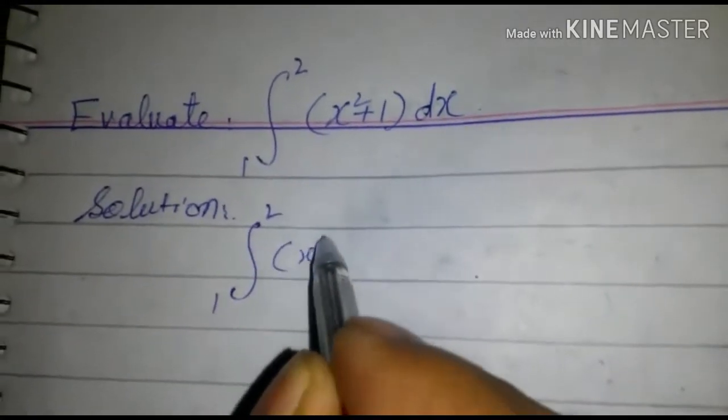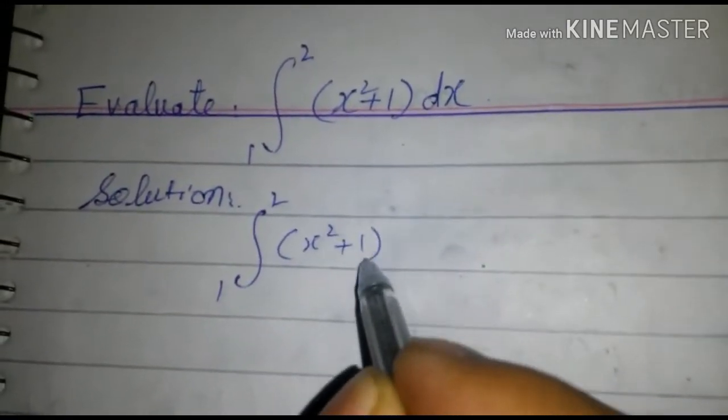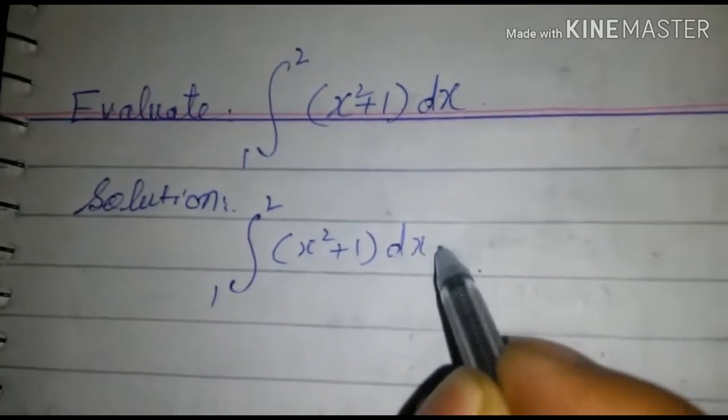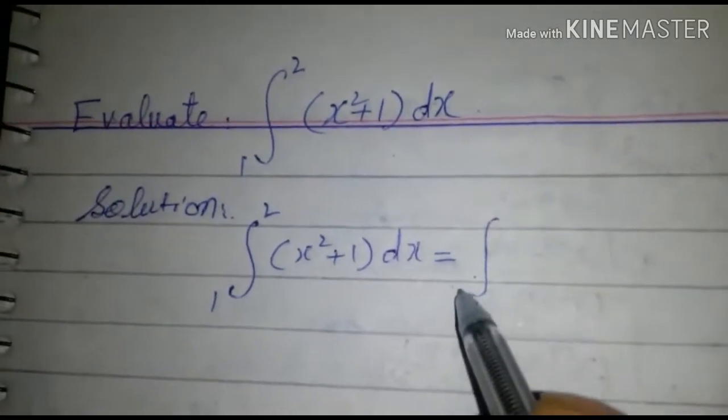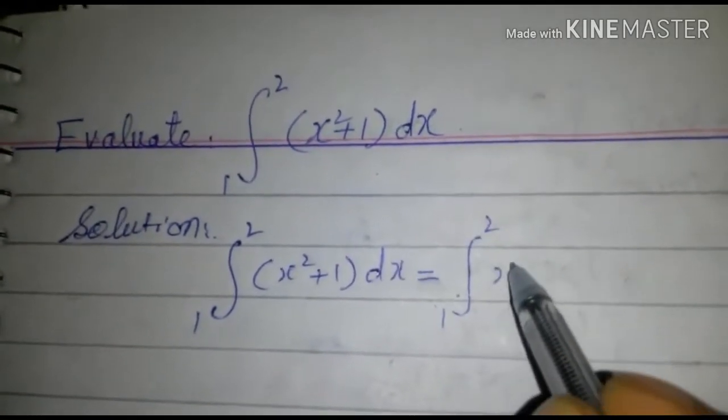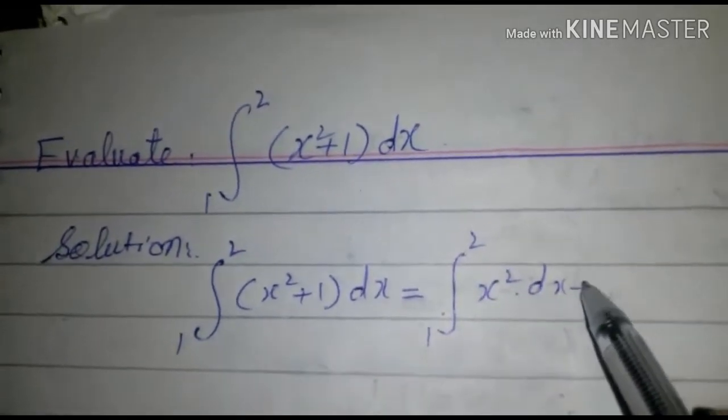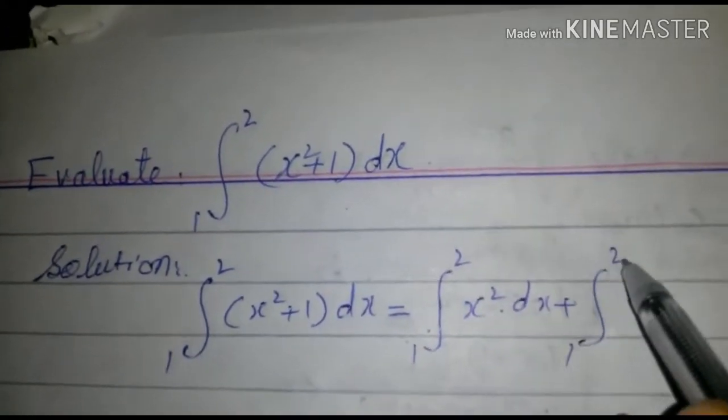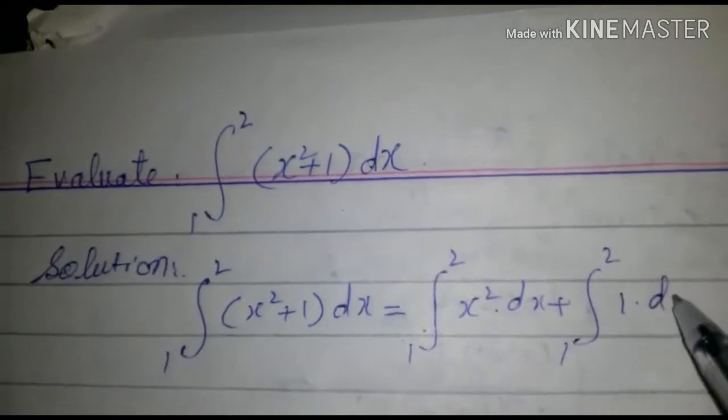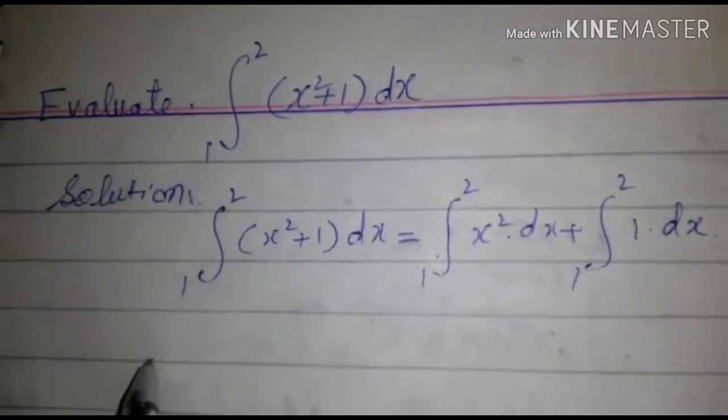Integral 1 to 2 x square plus 1 dx. We can write it as x square dx plus integral 1 to 2 1 dx.